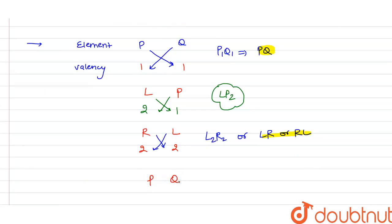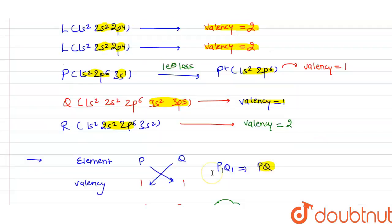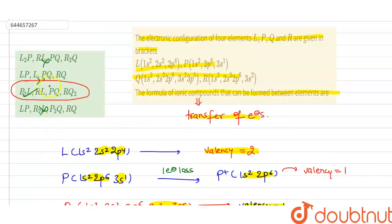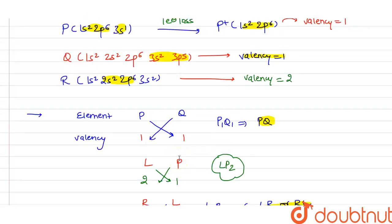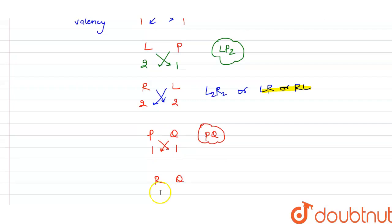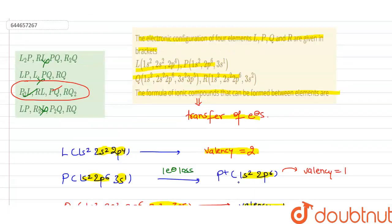For P and Q: valency of P is 1 and valency of Q is 1, so the ionic formula is PQ. For R and Q: valency of R is 2 and valency of Q is 1, so on cross-multiplying we get RQ2. Therefore, our third option is correct. I hope you got this concept — thank you.